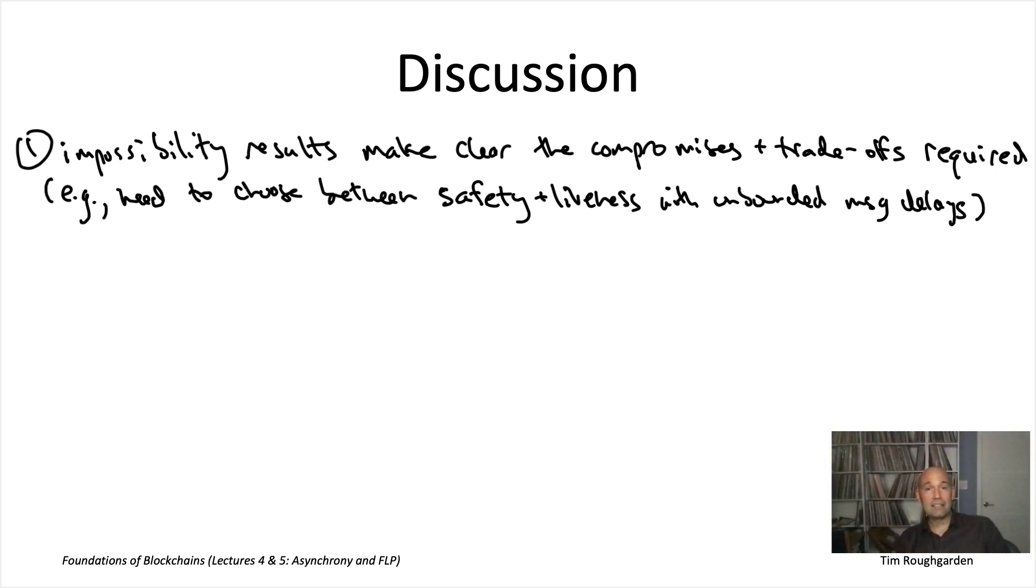If you wanted to put together a taxonomy of the major layer one blockchain protocols today, really a top-order node in classifying different blockchain protocols would be in the presence of asynchrony, do they compromise on consistency or do they compromise on liveness?